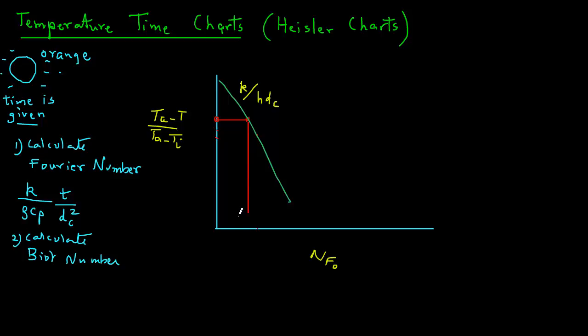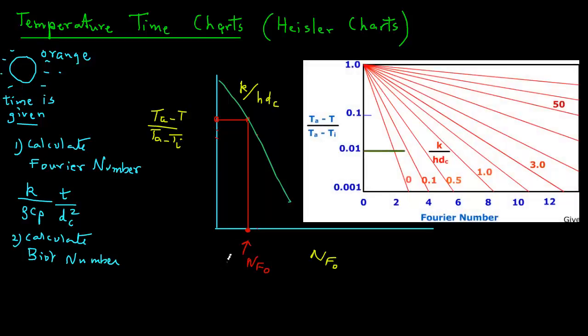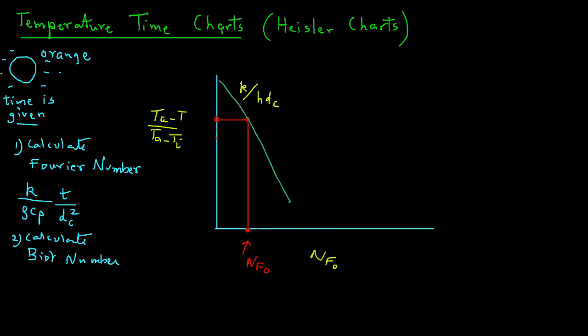And then from there, drop a vertical line down and see where it intersects the x-axis. And that gives us the Fourier number. And once we know that Fourier number from the chart, we can then, knowing the properties, find out what is the time. So that's the way to find out the time to reach a certain center temperature.